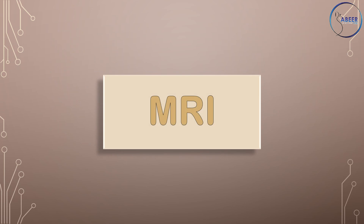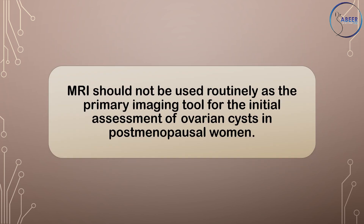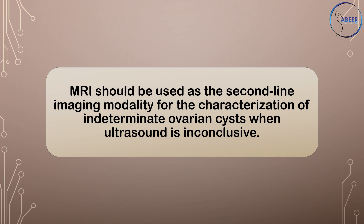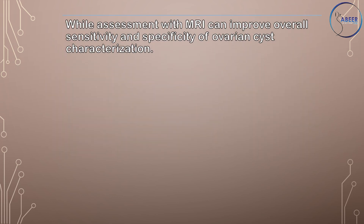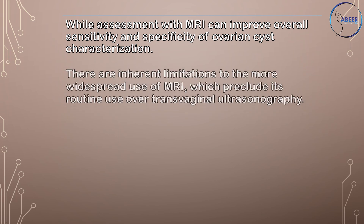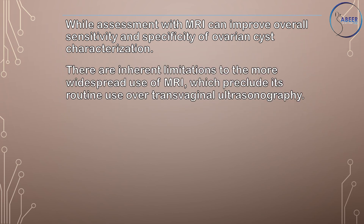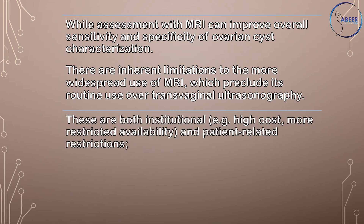MRI or Magnetic Resonance Imaging: MRI should not be used routinely as a primary imaging tool for the initial assessment of ovarian cysts in postmenopausal women. MRI should be used as a second-line imaging modality for the characterization of indeterminate ovarian cysts when ultrasound is inconclusive. While MRI can improve overall sensitivity and specificity of ovarian cyst characterization, there are inherent limitations including high cost and more restricted availability.